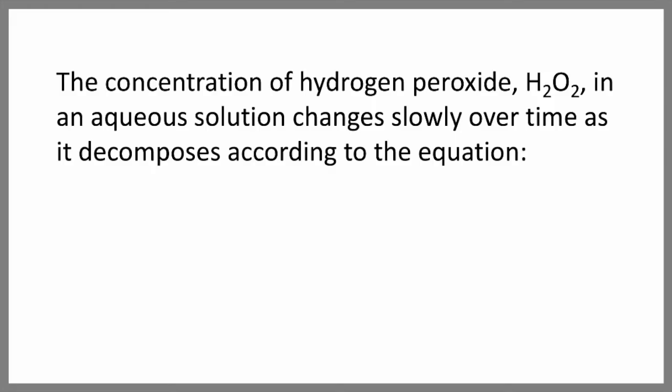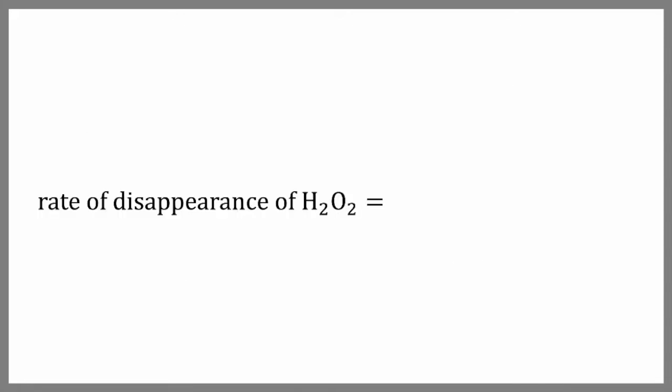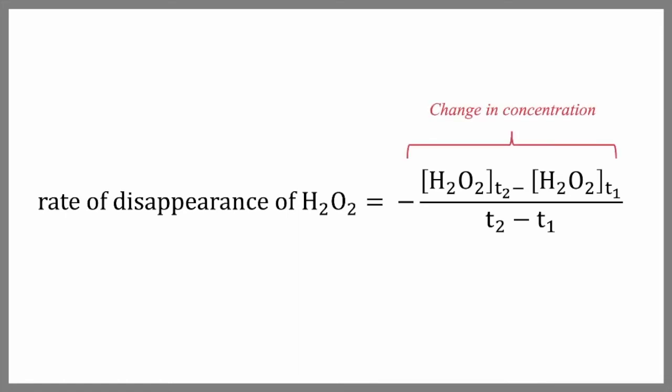So here's an example of how we can use these equations. The concentration of hydrogen peroxide in aqueous solution changes slowly over time as it decomposes, according to this equation. We can express the rate of hydrogen peroxide decomposition—in other words, the rate of its breakdown and disappearance. The H2O2 in brackets means concentration of hydrogen peroxide, and T1 represents the starting time, and T2 represents a later time. We can rewrite our expression like this.